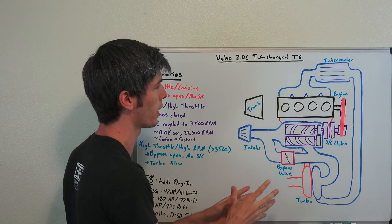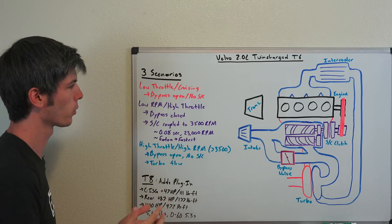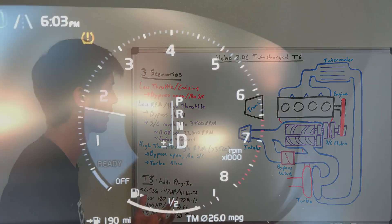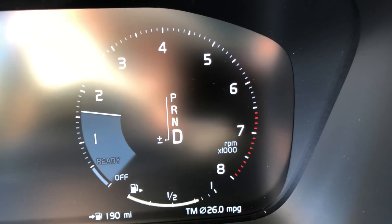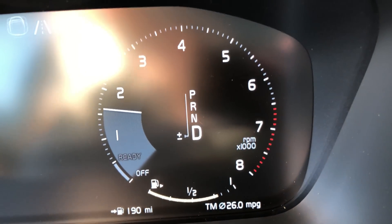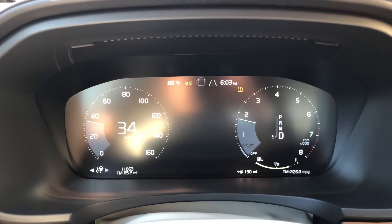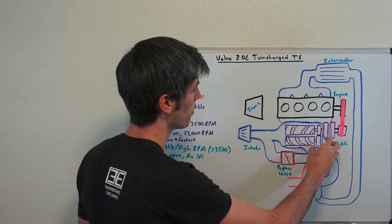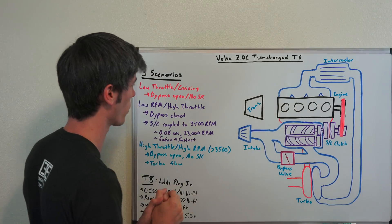So this is the basic setup of our engine, and there's really three scenarios we need to talk about in order to talk about how this airflow is working. So in low throttle scenarios, scenarios where maybe you're just cruising on the highway when you're not asking for a whole lot of power, obviously you don't need that supercharger working, and so it has a clutch which can decouple, so you're no longer spinning the supercharger.